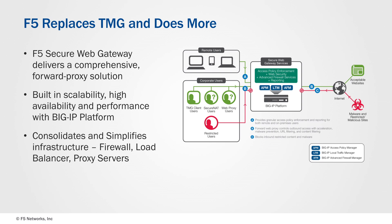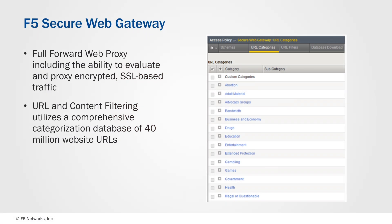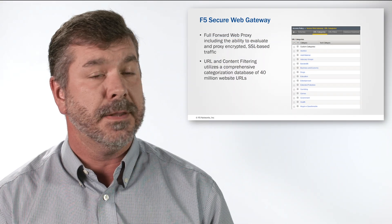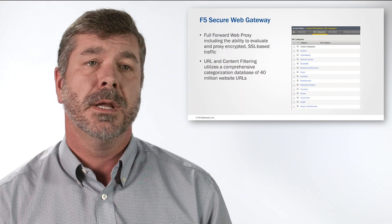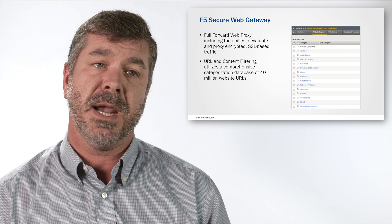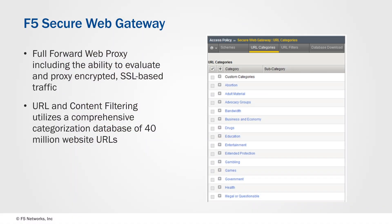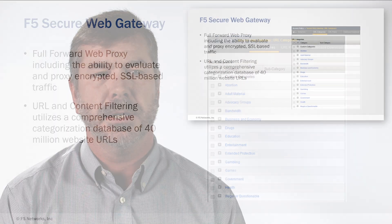Let's take a look at the F5 Secure Web Gateway features. Right off the bat, it's a forward proxy — it receives connections on behalf of clients, goes to the internet, downloads the content, evaluates the content whether it's encrypted or not, and then passes that inspected content to the end user. In conjunction with forward web proxy, SWG provides URL and content filtering.